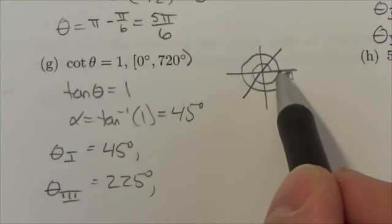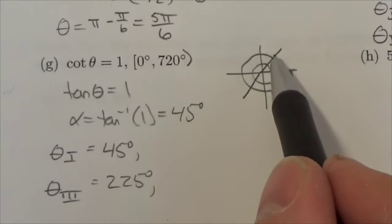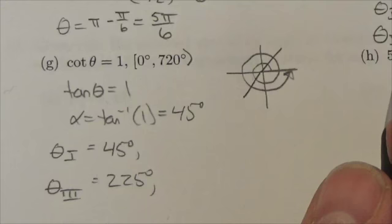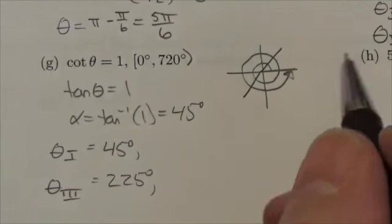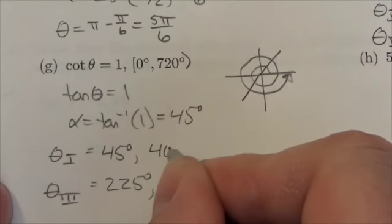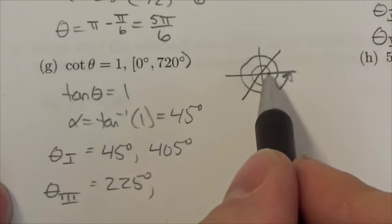So we're going to go all the way around 360 and add another 45 here. So 360 plus 45 is going to be 405 degrees. That's this angle right here up to this terminal arm.